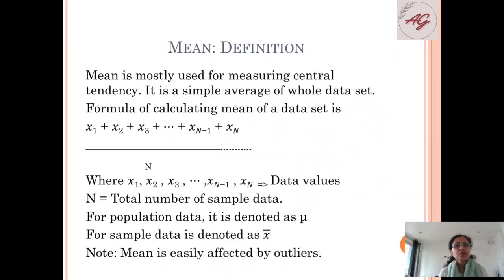What is mean? Mean is mostly used for measuring central tendency. It is a simple average of whole data set. The formula is x1 + x2 + x3 + ... + xN divided by N. These are all my data points which are divided by the number of data points. N is the total number of sample data.